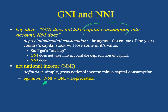The equation is straightforward: NNI equals GNI minus the depreciation of those goods. Use the bike analogy — it works really well. At the end of the year, the value of your bike after you've used it is the NNI. At the beginning of the year, before you started using it, you could use GNI. If you get that, then you understand the difference between GNI and NNI.